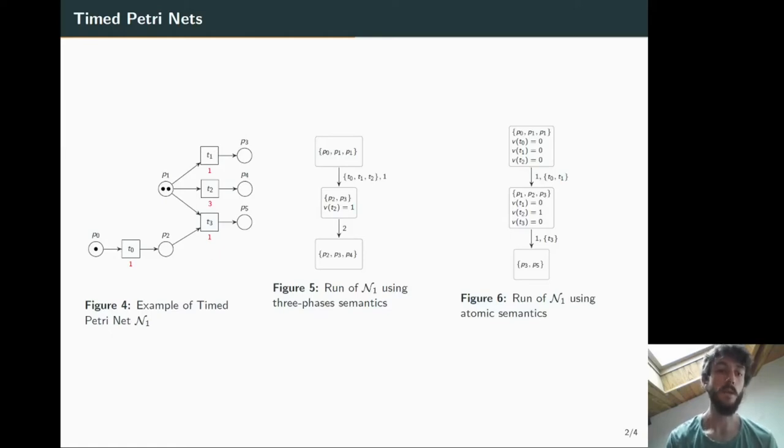First, it is locked, input tokens are consumed, then time is elapsed, and finally, output tokens are produced. We propose another firing rule that we prove to be at least as expressive, which starts with the wait, and then consumes and produces the tokens in an atomic action.